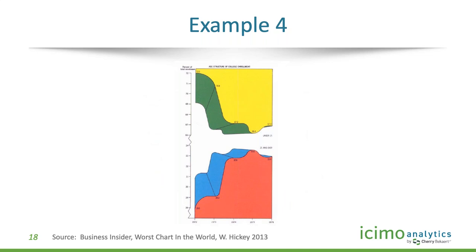This is deemed by Edward Tufte — one of the key historical thought leaders in data visualization — as the worst chart ever. This chart is trying to show the age structure of college enrollment, under 25 and over 25 as a percentage. It doesn't tell the story. In addition to being 3D, the colors don't distinguish different elements, it uses a chart type no one is familiar with, an area chart moving both directions, and a broken scale. Understanding how all of these things fit together becomes very important.